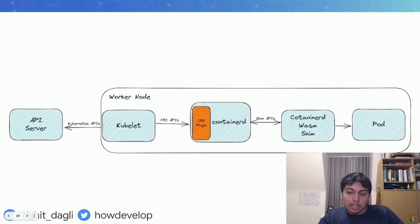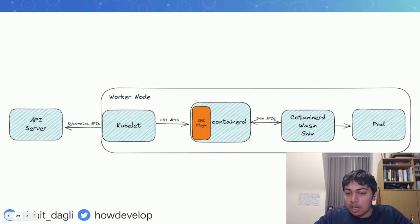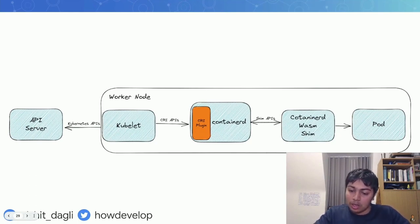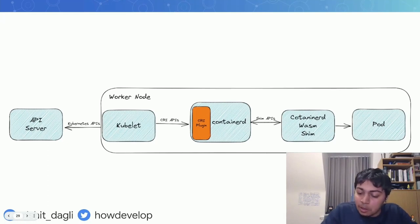If you look at the overall setup: you have kubelet and containerd, and runWASM can be managed using a CRI plugin. Then we have the containerd WASM shim, which talks to the container runtime engine — containerd. This is how our setup for running WASM workloads in Kubernetes essentially looks. On a single worker node running WASM applications, this is what you'd want to do.